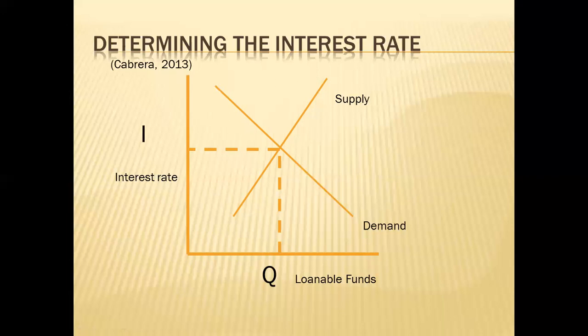As illustrated in this figure, the interest rate will bring the quantity of funds demanded into balance with the quantity supplied. At the equilibrium interest rate, the quantity of funds borrowers demand for investment and consumption now rather than later will just equal the quantity of funds lenders save. So the interest rate brings the choices of borrowers and lenders into harmony.